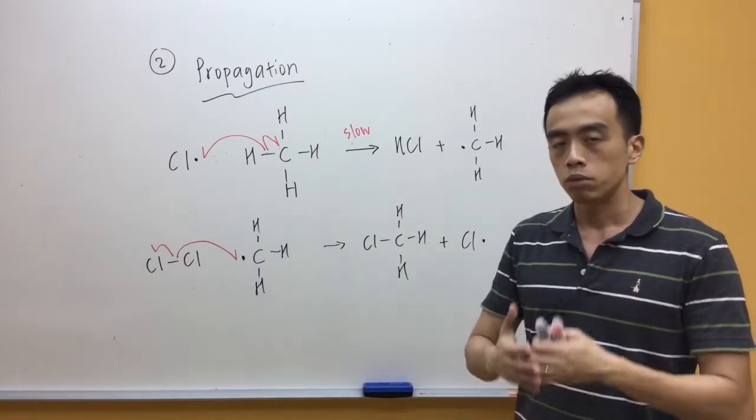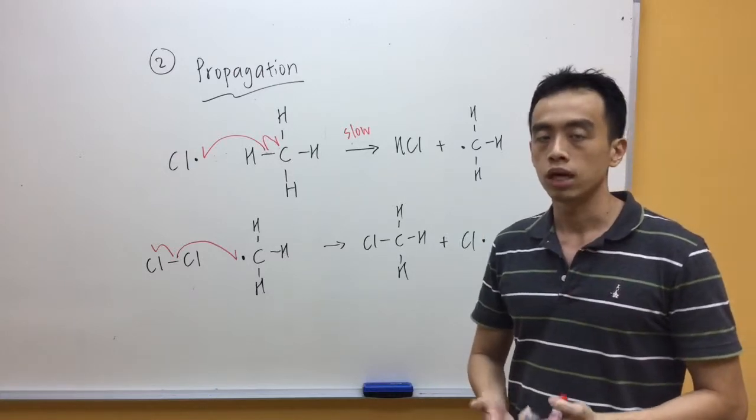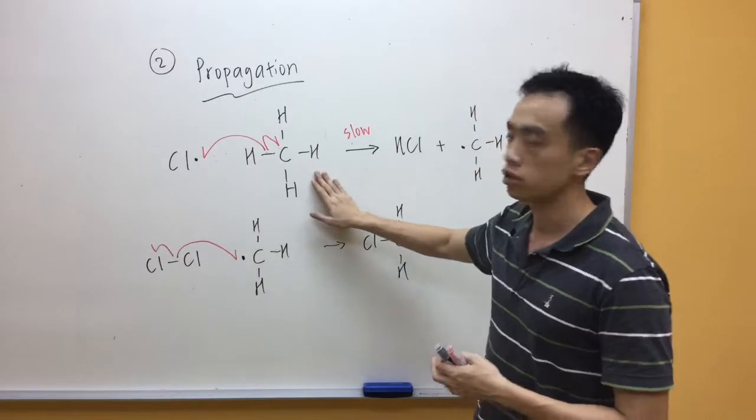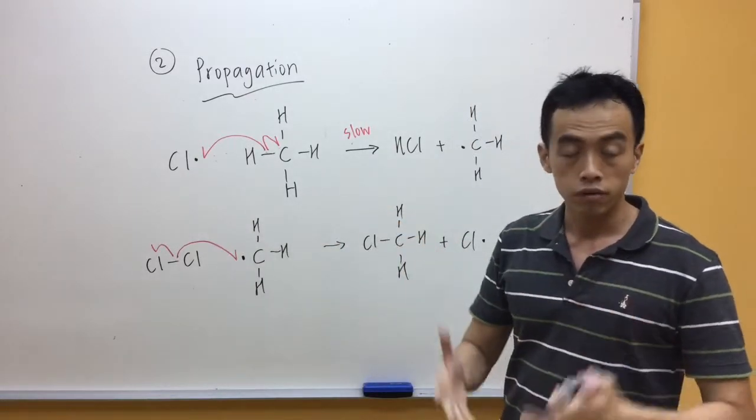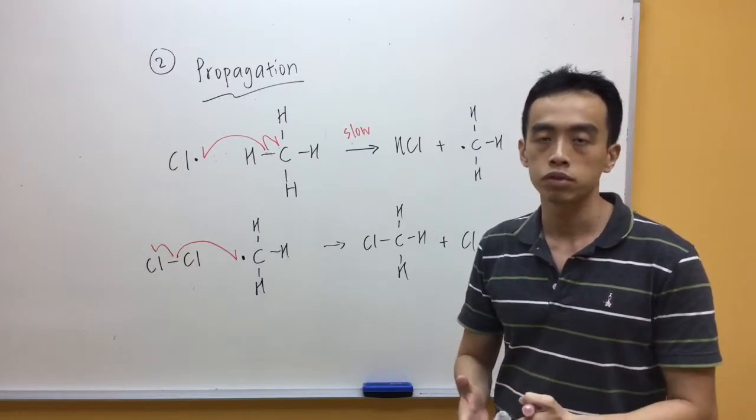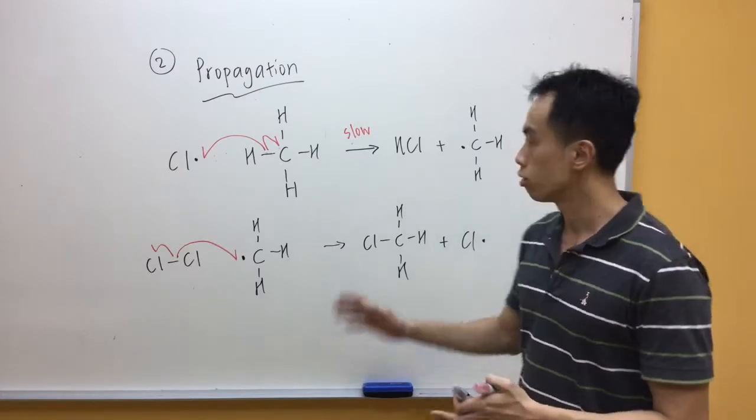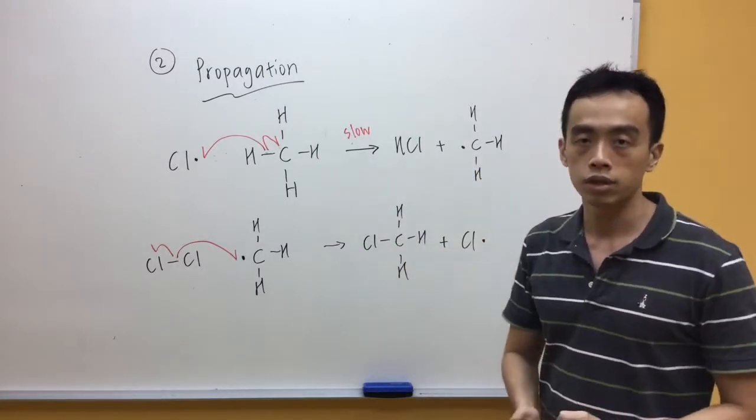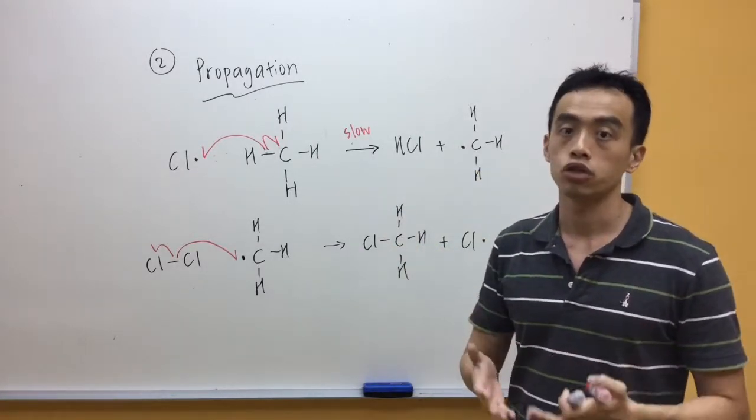And then we can proceed to the next step. Now another idea is because the bulk of the reaction will be our propagation step. Because the chances of a radical meeting a neutral species is very, very high. So most of the steps that are involved in free radical substitution is my propagation step. So any products that you can form in the propagation step will be found in large amounts.